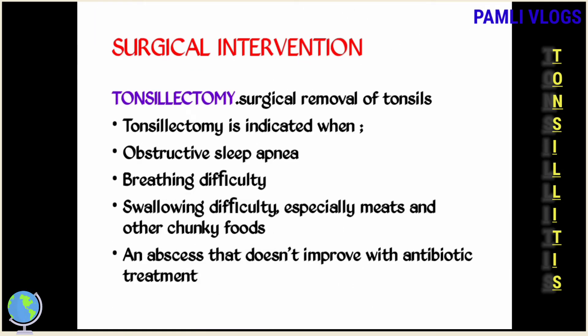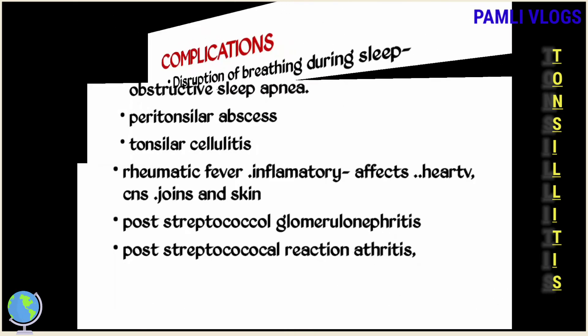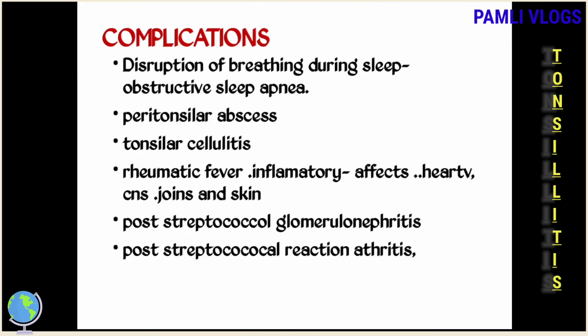Surgical intervention involves the removal of the tonsils — a procedure called tonsillectomy — which can be unilateral (one side) or bilateral (both sides). Tonsillectomy is indicated when there is obstructive sleep apnea, breathing difficulties, difficulty swallowing especially with chunky foods like meat, or an abscess not responding to antibiotics.